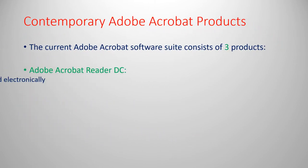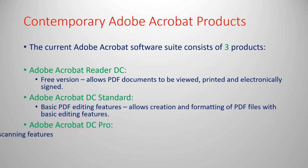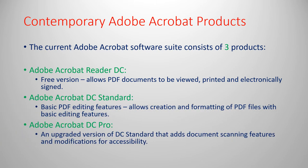Let's take a look at what the current, or contemporary, Adobe Acrobat products are. I had mentioned what they started out as in 1993, and Adobe does like to change their product names quite frequently. Currently, in the Adobe Acrobat suite, there is Reader DC — that is the free version we're going to be loading in our lab this week. It allows you to view and print PDFs, as well as electronic signatures. The DC Standard has editing features and is not as extensive as the DC Pro, but both allow you to edit and create PDF documents. The only difference with DC Pro is it's upgraded to allow certain scanning features and accessibility modifications.